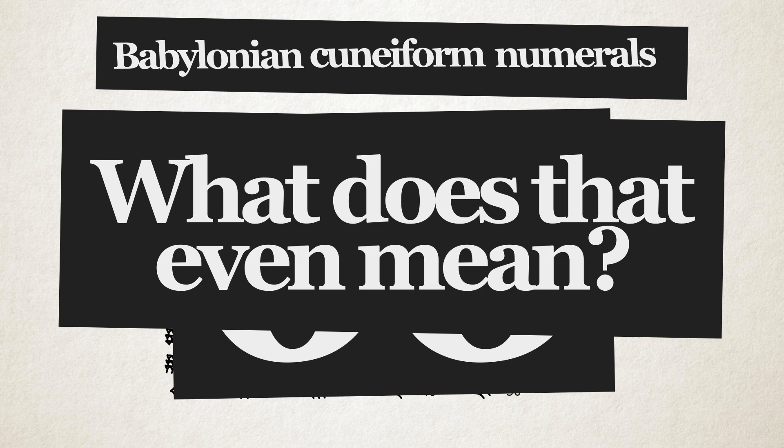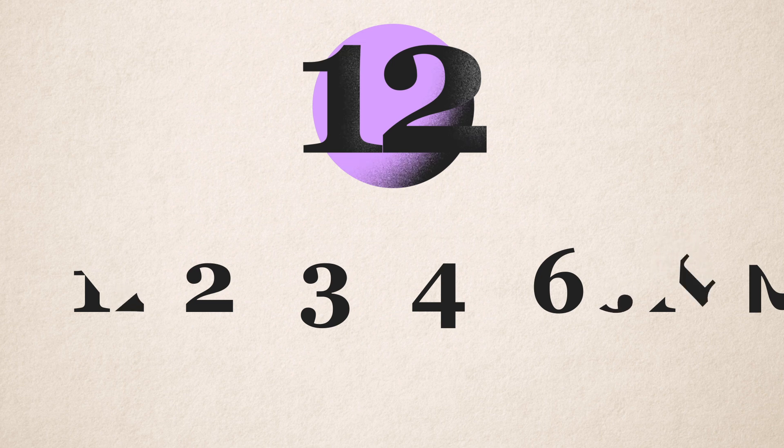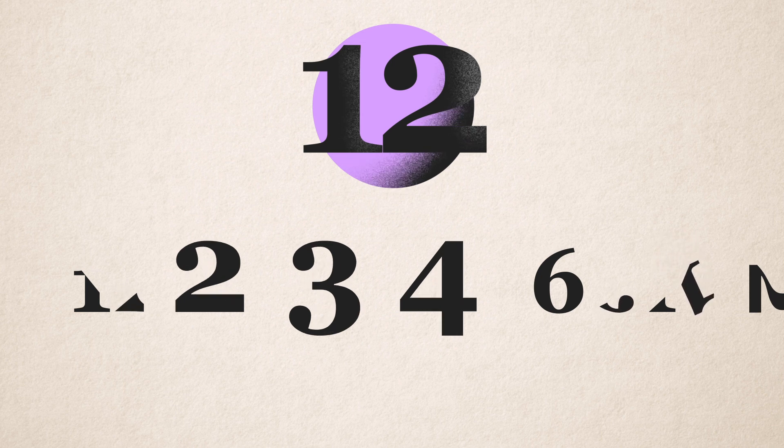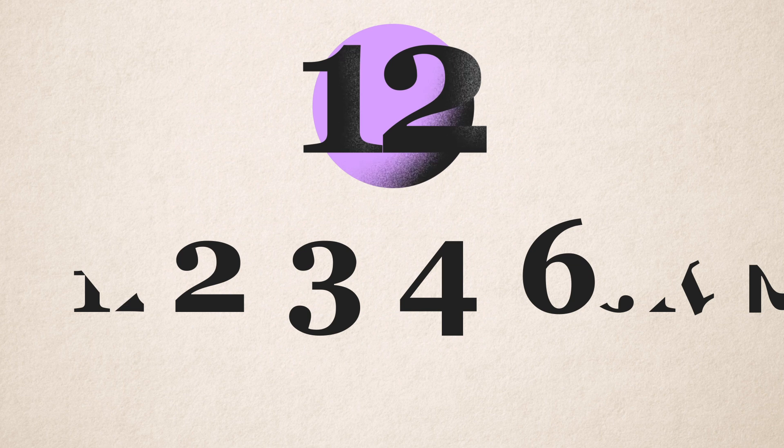So anyway, what does that even mean? Well, it means that if we discard 1 and the number itself, we see that the mighty 12 has 4 divisors: 2, 3, 4 and 6. That's why it's called highly composite.